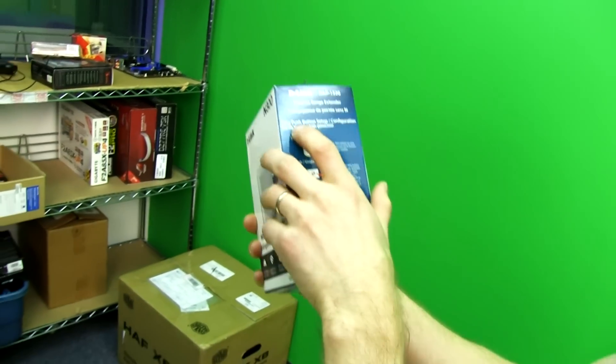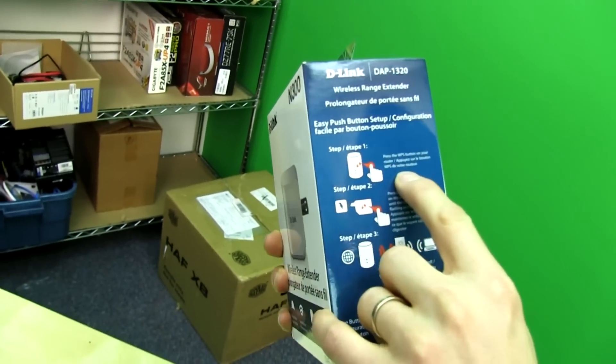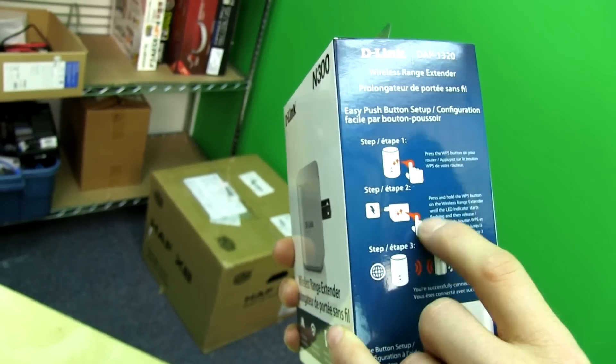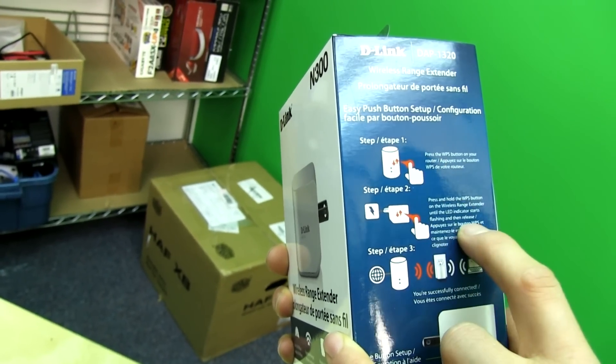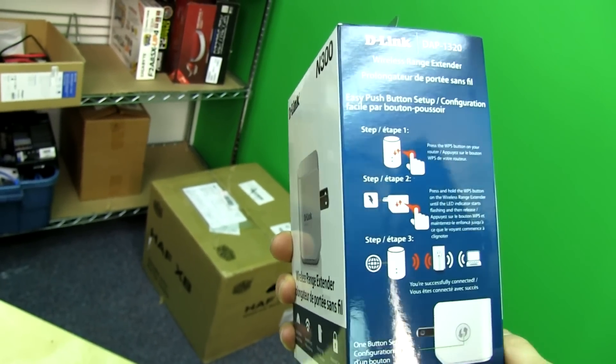So, right, how do you use it? Easy push-button setup. So it uses WPS, you press the WPS button on the router, then you press and hold the WPS button on the wireless range extender until the LED indicator starts flashing, then you release it, then you're successfully connected.